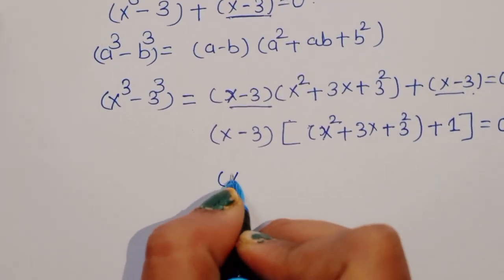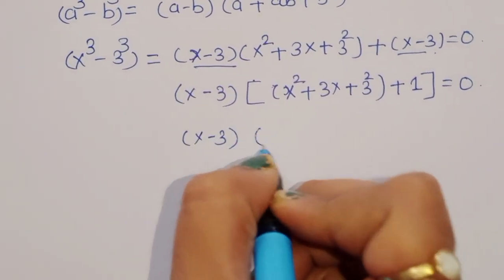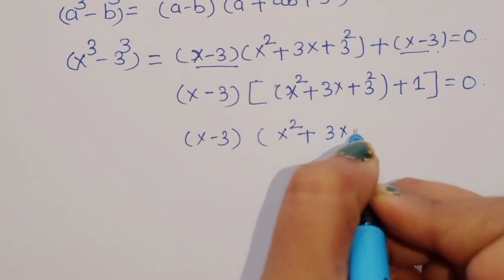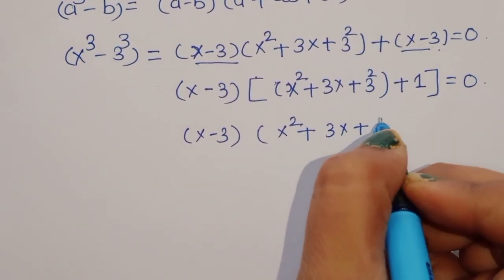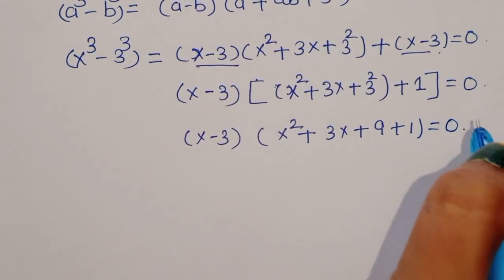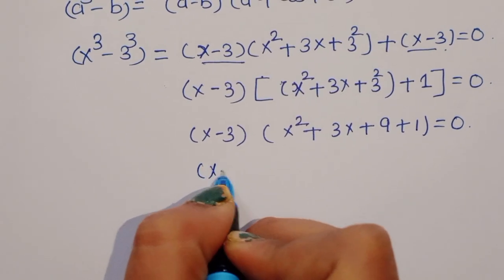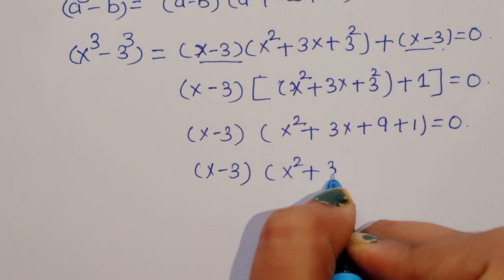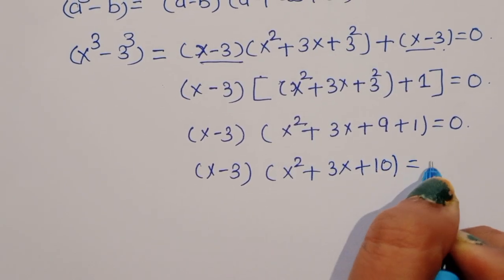We can write this as (x − 3)(x² + 3x + 9 + 1) = 0, which simplifies to (x − 3)(x² + 3x + 10) = 0.